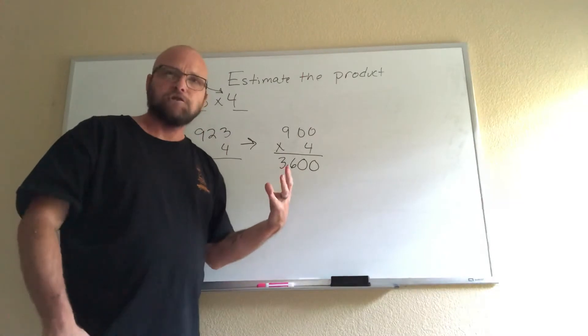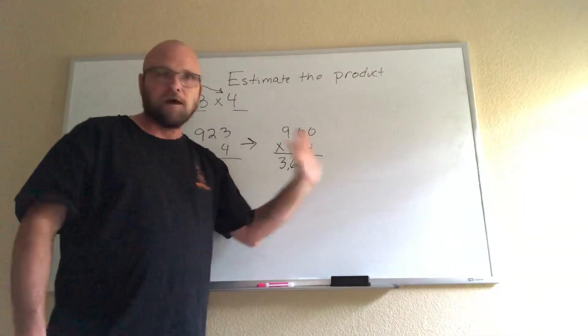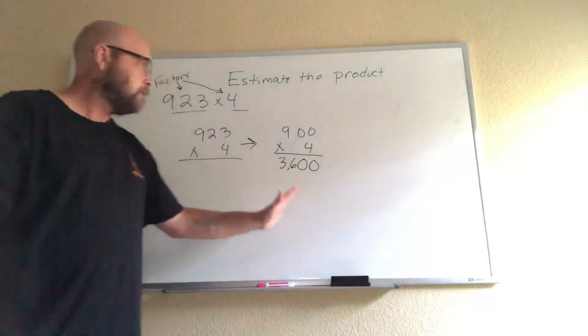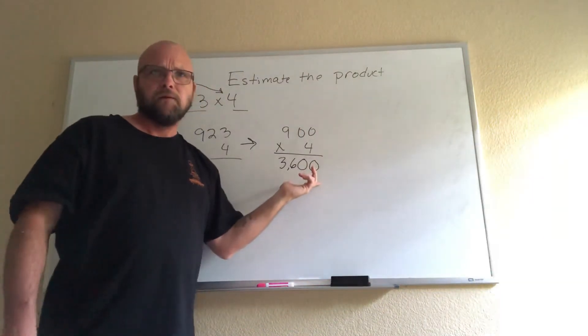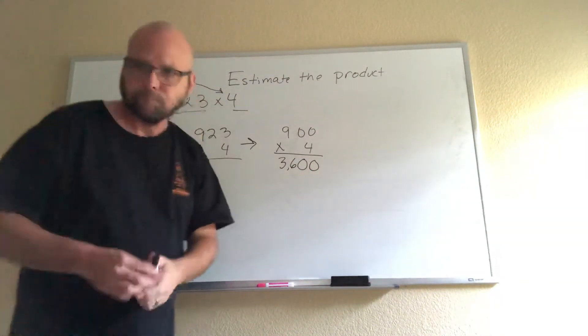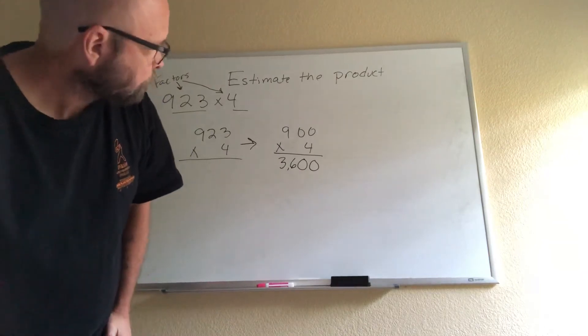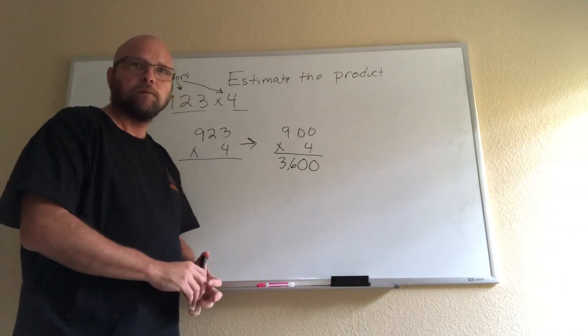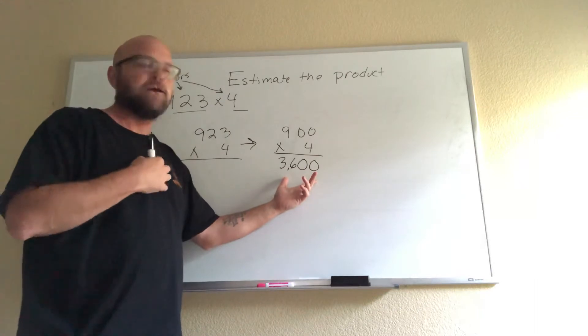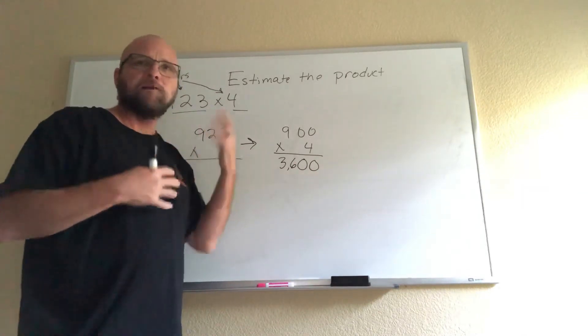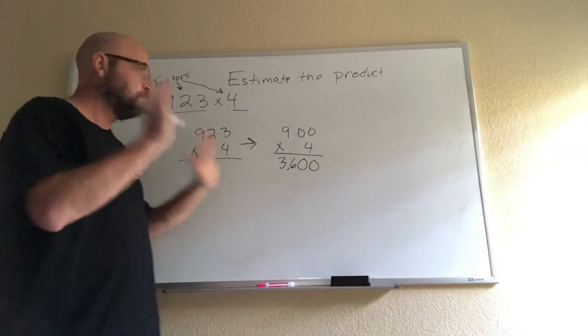Now if I'm doing a multiple choice question and I know my estimate is going to be smaller than my real answer, I might be able to cross off some of the answer choices that are way smaller than this or way bigger than this. Student: What if you change your estimate to 920 and got 3,680? Teacher: That's fine. Your estimate and my estimate may be a little bit different because we may look at numbers differently.